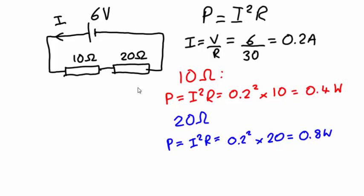So in this series circuit the 20 ohm resistance is dissipating the most power. In a series circuit a larger resistor will dissipate more power because power is proportional to the resistance.